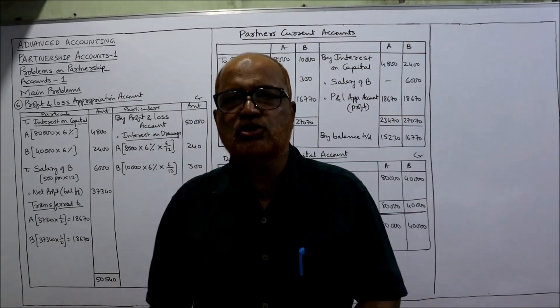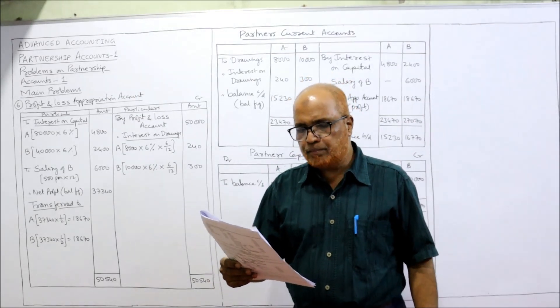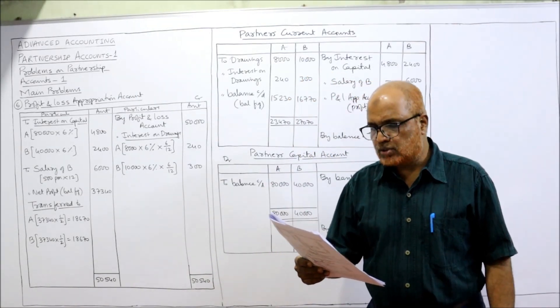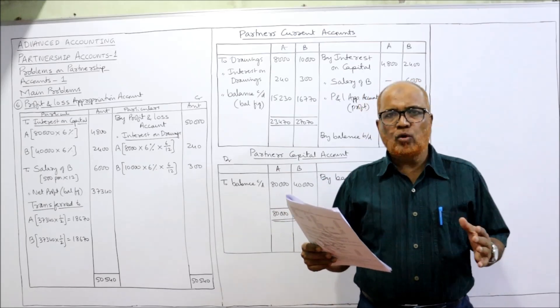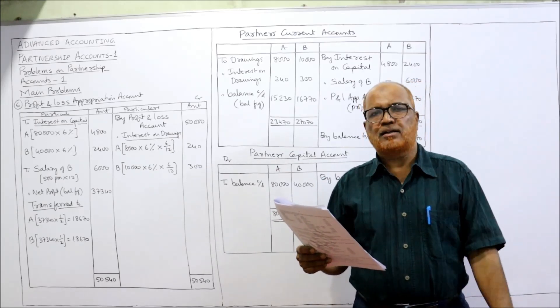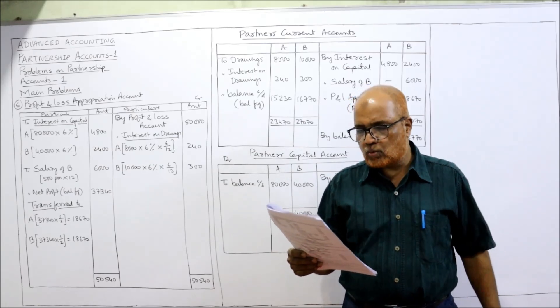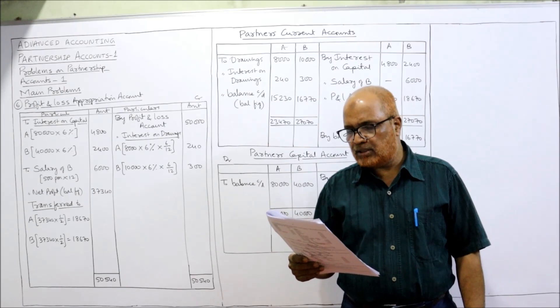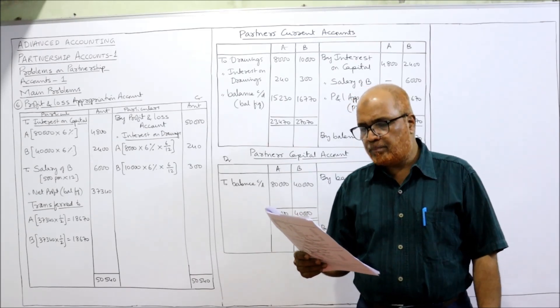Now see the sixth problem. A and B start business with capital of 80,000 and 40,000 on 1st January 2005. A new partnership business was started, two partners are A and B, and the capital introduced was 80,000 by A and 40,000 by B.